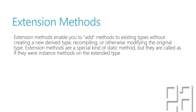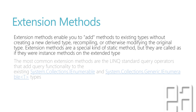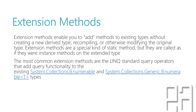Extension methods. An extension method enables you to add methods to existing types without creating a new derived type, recompiling, or otherwise modifying the original type. Extension methods are a special kind of static methods but they are called as if they were instance methods on the extended type. The most common extension methods are the LINQ standard query operators that add query functionality to the existing System.Collections.IEnumerable and System.Collections.Generic.IEnumerable of generic type T. So extension methods add methods to an existing type without creating a new derived type.